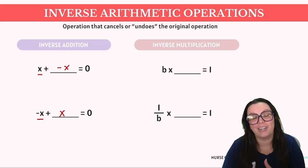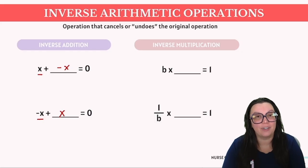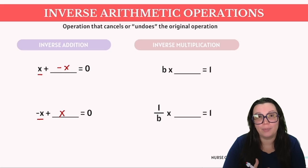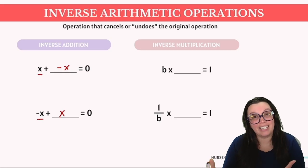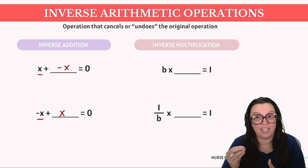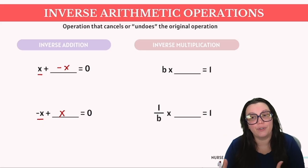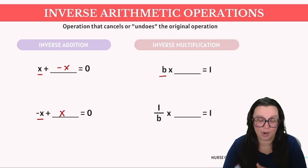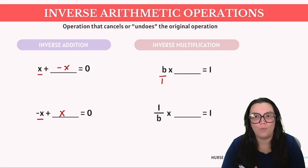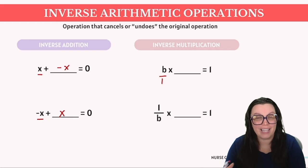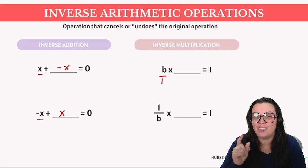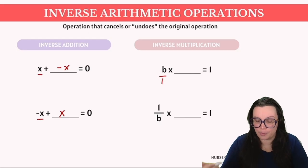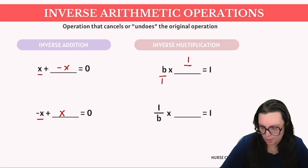Now let's dive into the inverse property of multiplication. This principle is centered around identifying what number, when multiplied by another, is going to yield one. Essentially any number times its multiplicative inverse or reciprocal equals one. Consider the letter B, where B is a whole number and not a fraction. It's helpful to represent B in its fractional form as B over one. To find the reciprocal, we invert the fraction, making the denominator the new numerator and the numerator the new denominator. Therefore the reciprocal of B is actually one over B.